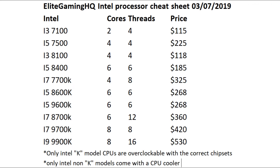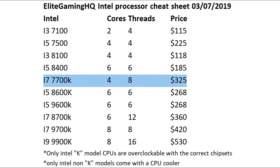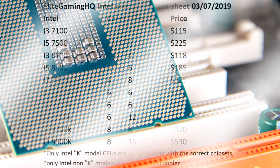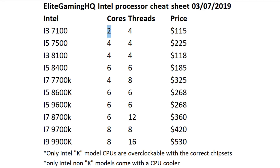Let's start with a couple of i3s - we have the 8th gen i3 and the 7th gen. Anything in the 7th gen area, I don't want you to buy - the architecture is different now; 8th gen is amazing compared to 7th gen. The old i3s, 7th gen and before, were two cores, four threads with hyper-threading. The old i5s were four cores, four threads. But now the new i3s are four cores, four threads and outperform all of those. So this is a really good buy for gaming alone.